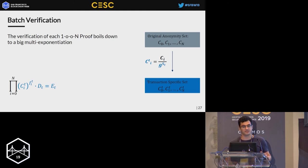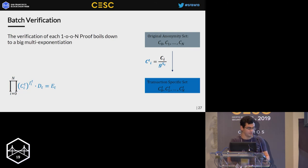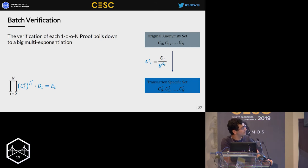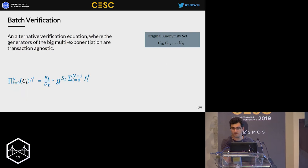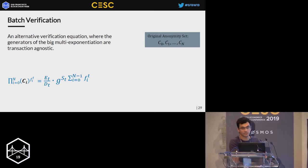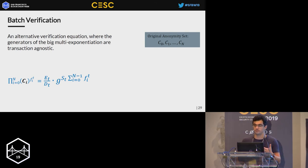Let's see how we enable fast batch verification of one out of many proofs. Verification is linear in size N and boils down to a big multi-exponentiation, where the generators are transaction-specific: for each spent coin, the user subtracts the coin serial number from the corresponding commitments, resulting in transaction-specific generators. Since these serial numbers are revealed in spent transactions, we can incorporate them into the verification equation and obtain an equivalent equation where the generators in the multi-exponentiation are transaction-agnostic, enabling batch verification of many transactions together.